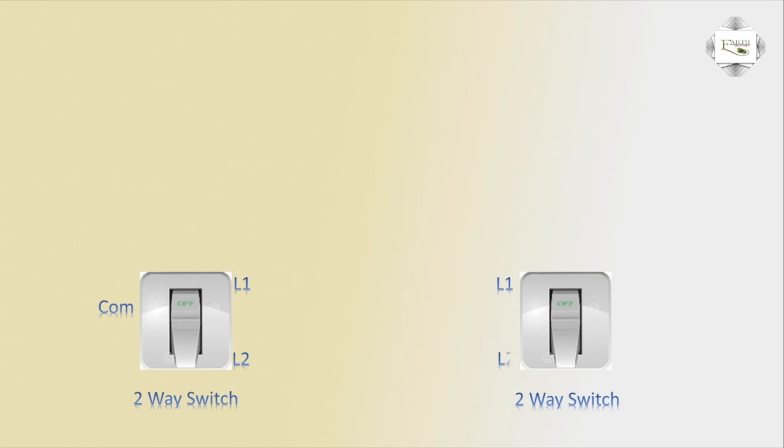Two number switch same. Two-way switch circuit diagram: common, line one, line two. Common must be common one bar, line one second bar, line two connection.